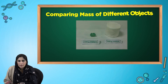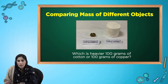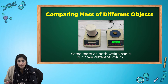Let's look at this picture. Pause the video for a while and think about this question: which is heavier — 100 grams of cotton or 100 grams of copper? Some of you might think cotton is lighter than copper. However, they both weigh the same, because both have the same masses due to the same number of particles, though they have different volumes because they occupy different amounts of space.